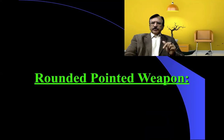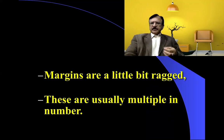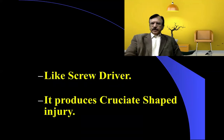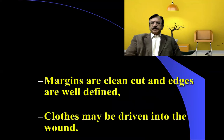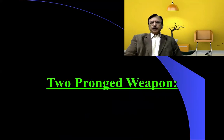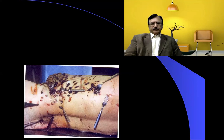If the weapon is a rounded pointed instrument like an ice pick or needle, it produces circular injuries. Margins are slightly ragged and the piercings are usually multiple. If the weapon is a pointed square-shaped instrument like a screwdriver, it produces a cruciate-shaped injury with clean-cut margins and well-defined edges. If the weapon is a two-pronged instrument like a dining fork, it produces a paired pattern of injuries with paired piercing holes.